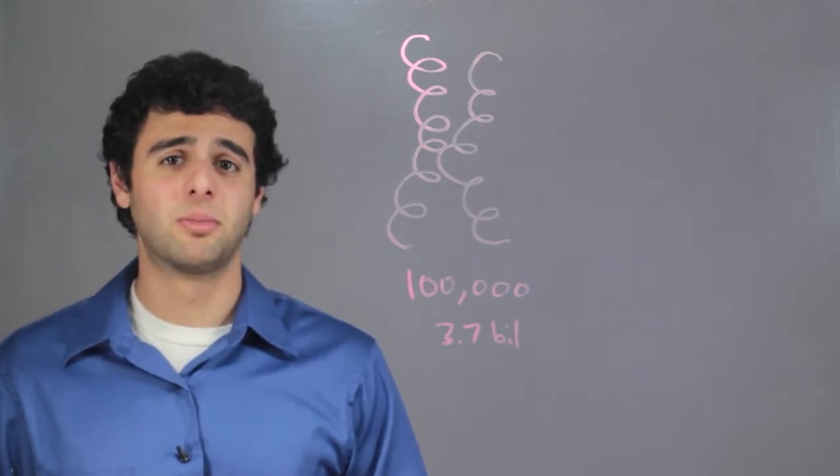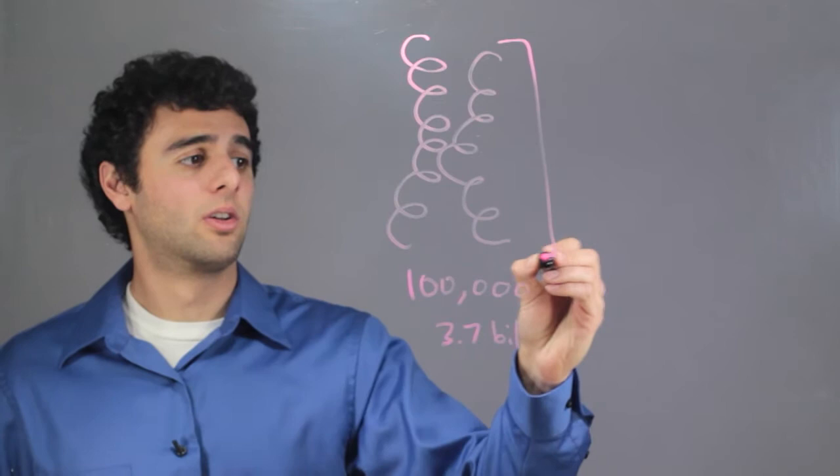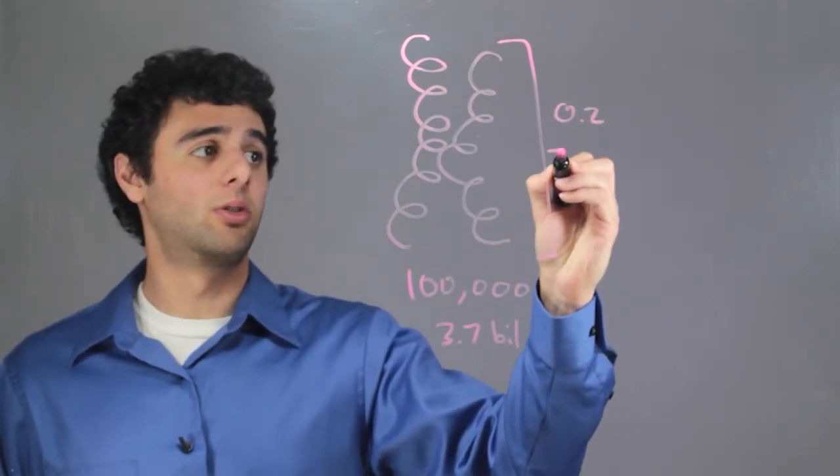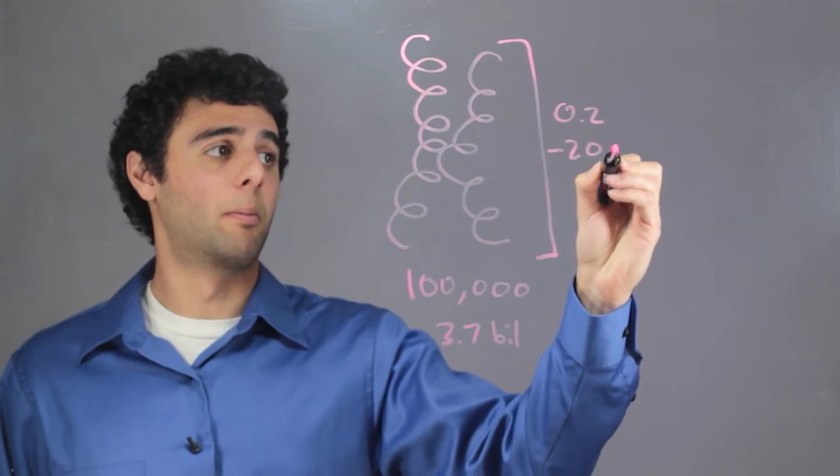How big does that make a chromosome? It's still fairly small, 0.2 to 20 micrometers.